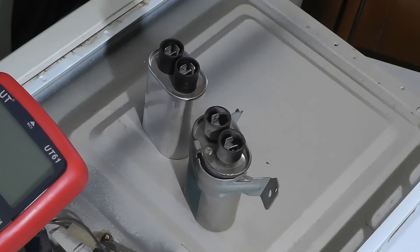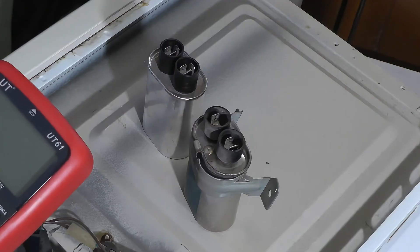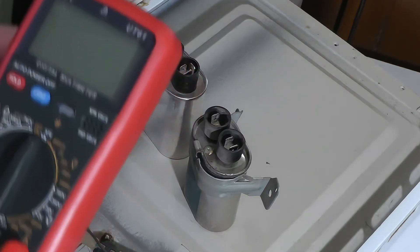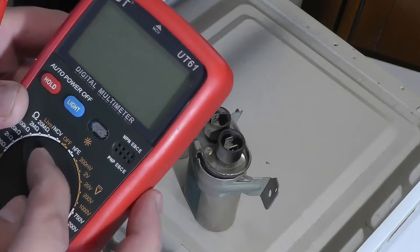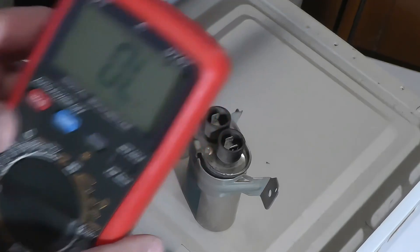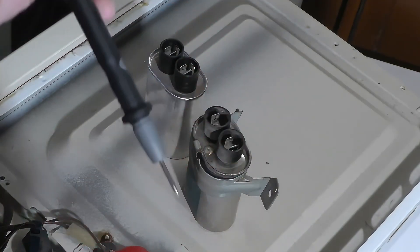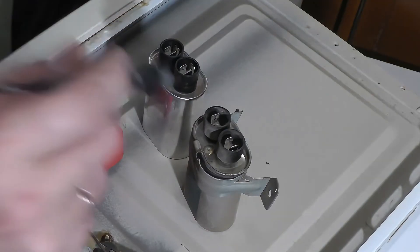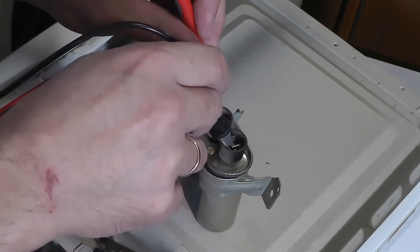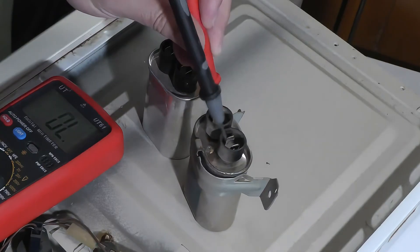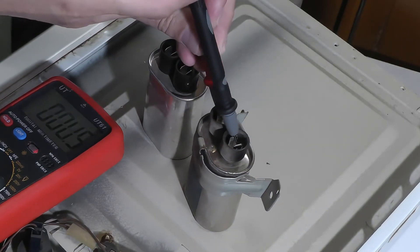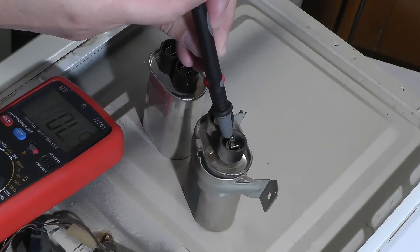Now I'll show you how I identify the fault in this capacitor. We'll need a regular multimeter. Set it to continuity mode or resistance check and touch both probes to the faulty capacitor. You can see that the multimeter beeps and shows a short circuit. In other words, it's blown.